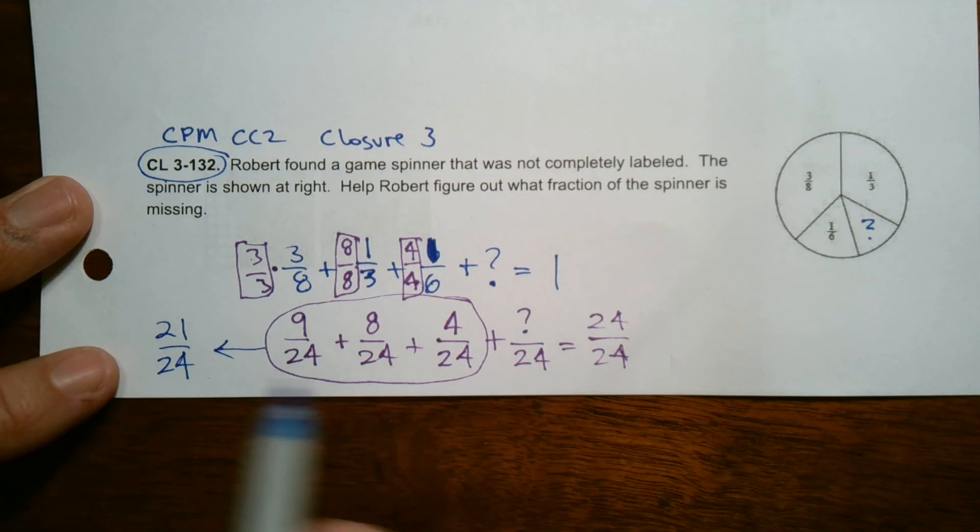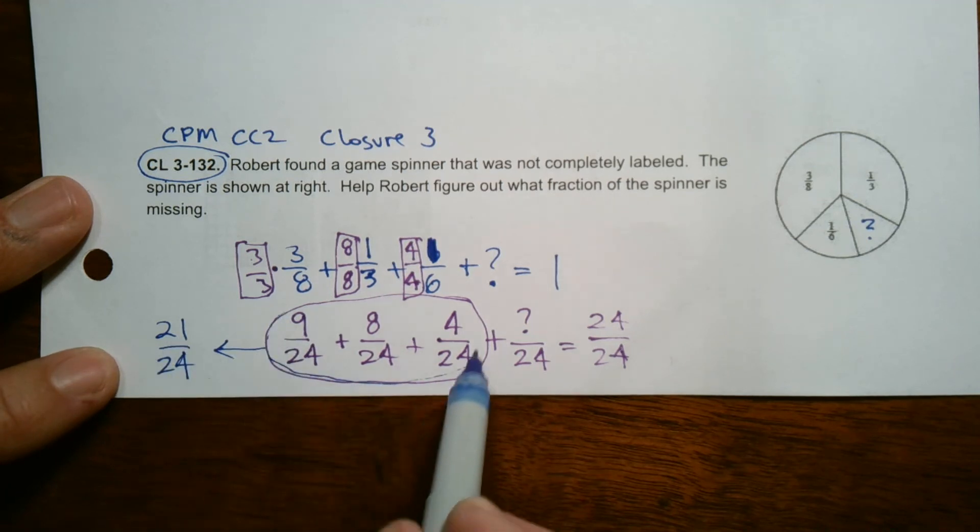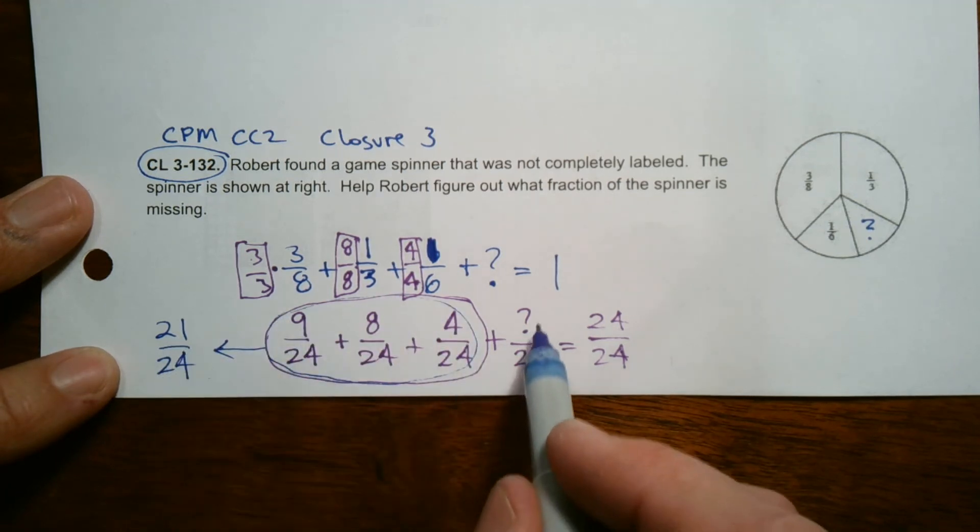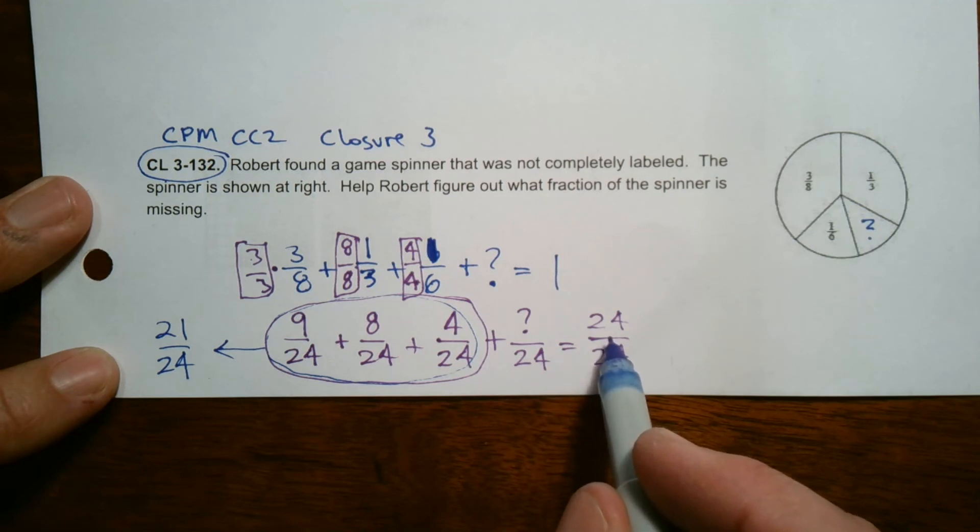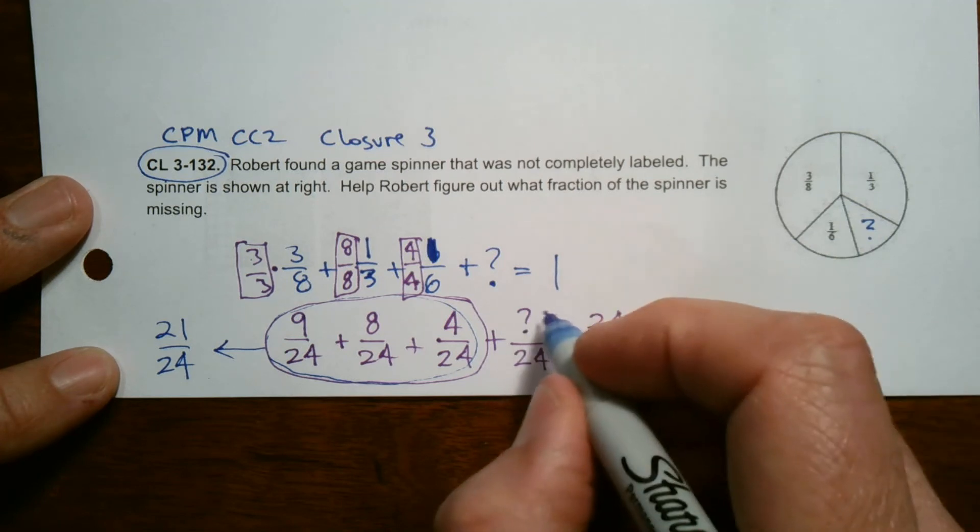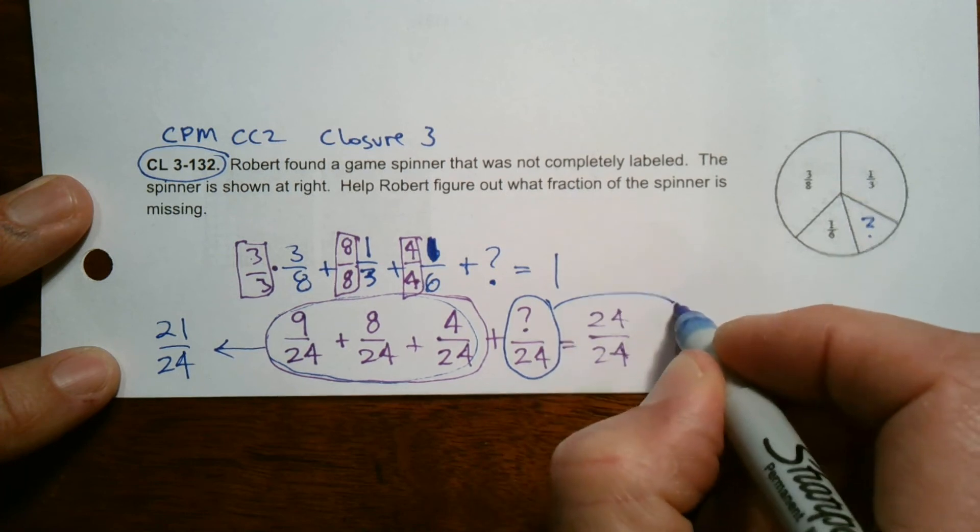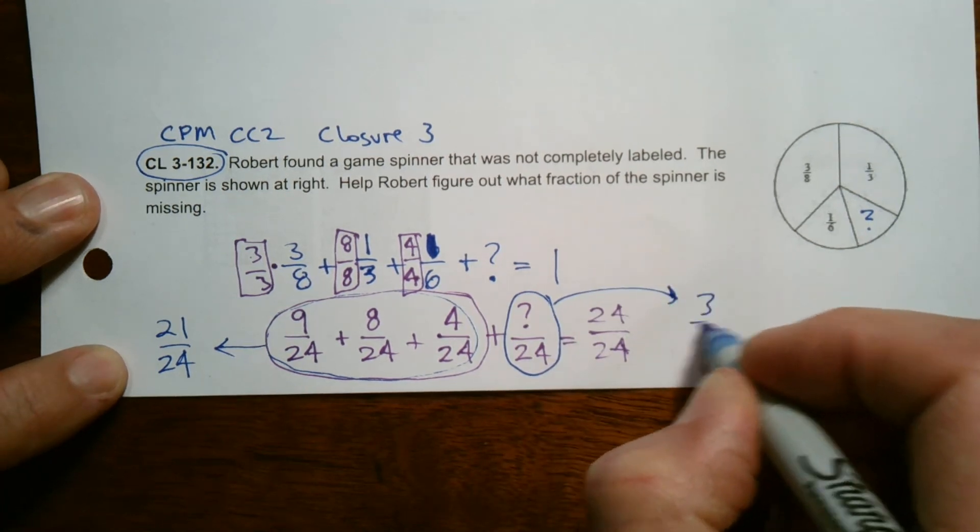So then what's left? If I have this piece here, all of these together is 21 over 24. How many 24s do I need to be 24 over 24, right? I have 3. So I know then that that has to equal 3 over 24.